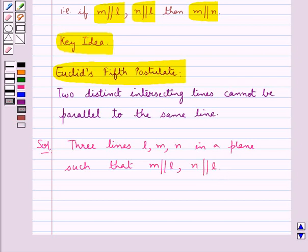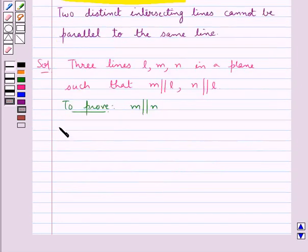That is, two distinct lines M and N are parallel to the same line L, and we need to prove that M is parallel to N.